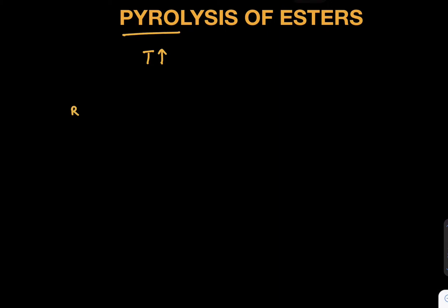I will just draw one ester in front of you. Let's say we have RCH2, CH2, oxygen, C double bond O, R. So if you observe, is it an ester? Yes, it is an ester.